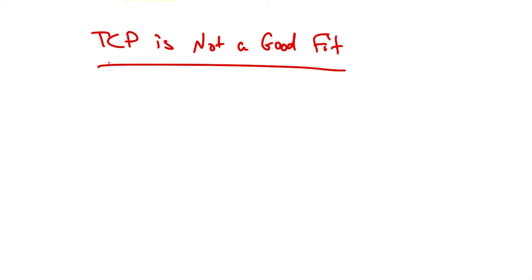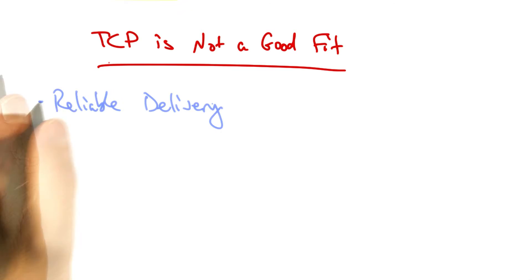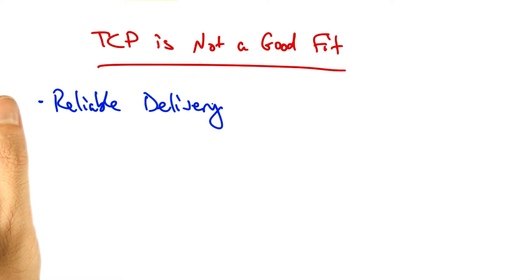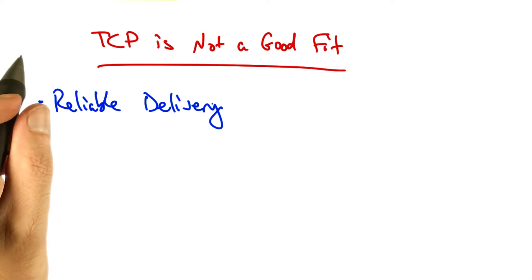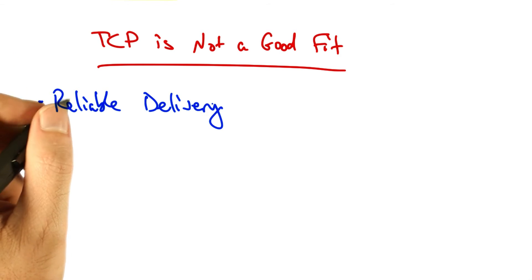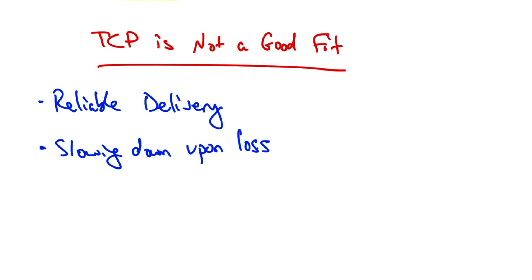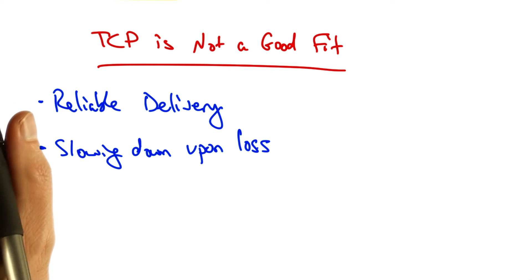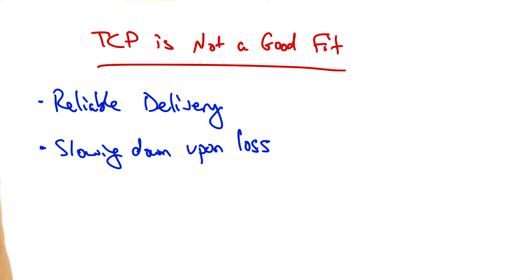It turns out that TCP is not a good fit for congestion control for streaming video or streaming audio. TCP retransmits lost packets, but retransmissions may not always be useful. TCP also slows down its sending rate after packet loss, which may cause starvation at the client.